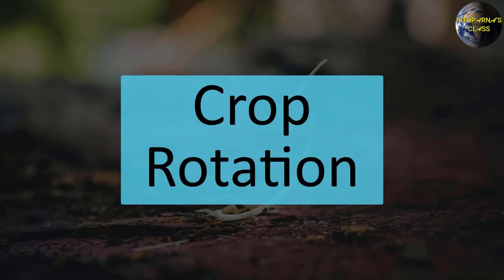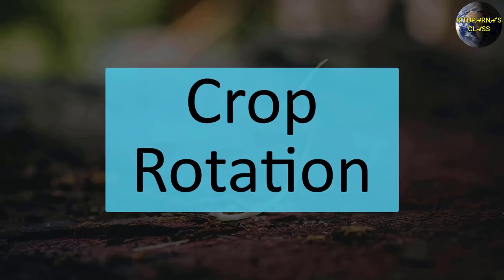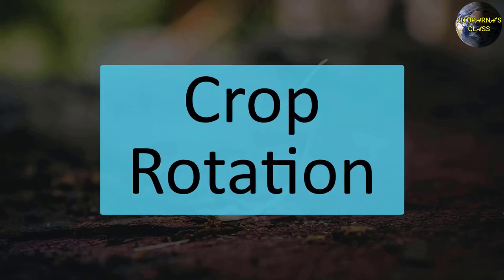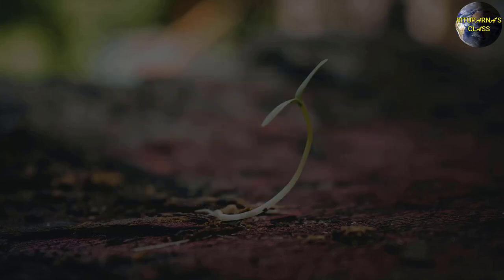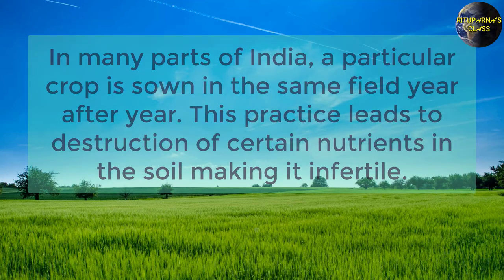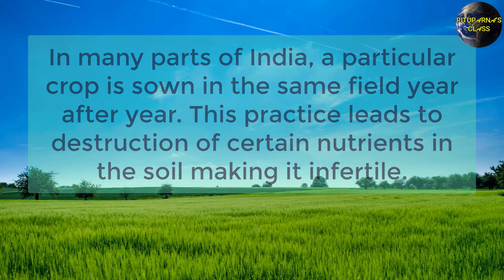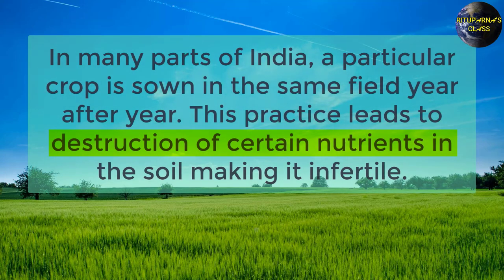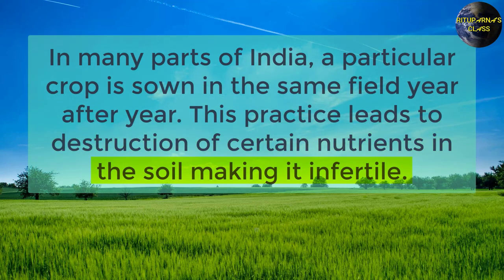First, we are going to discuss crop rotation. In many parts of India, a particular crop is grown in the same field year after year. This practice leads to the destruction of certain nutrients in the soil, making it infertile.